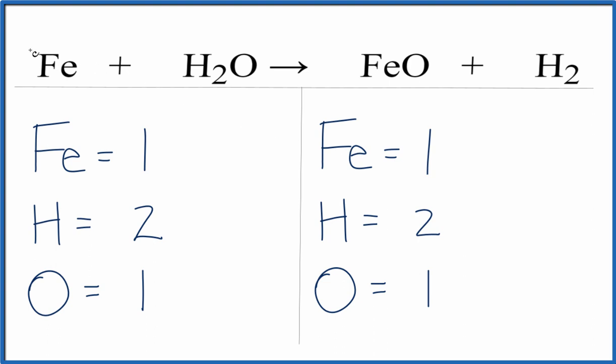So again, we can only put numbers in front. Can't change the little numbers. So when we look at this, we have one iron on each side, two hydrogens on each side, and one oxygen. And this equation is actually already balanced.